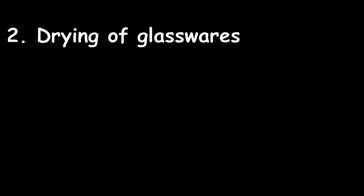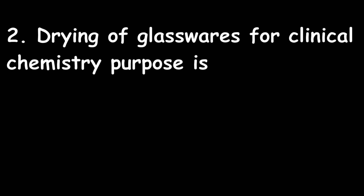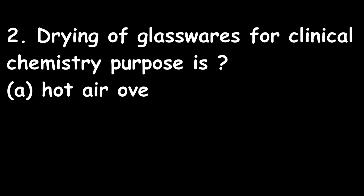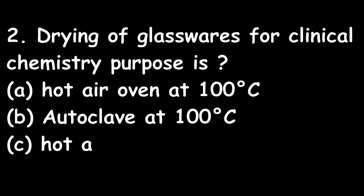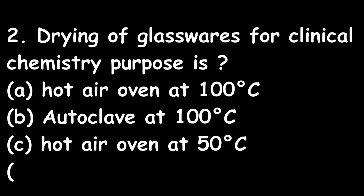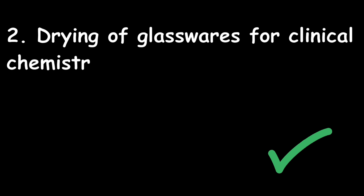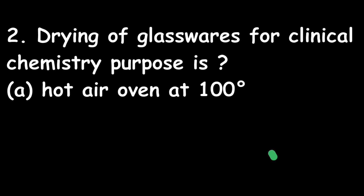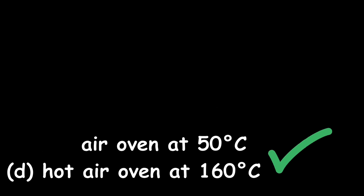Question 2: Drying of glassware for clinical chemistry purpose is done in: Option A: hot air oven at 100°C; Option B: autoclave at 100°C; Option C: hot air oven at 50°C; Option D: hot air oven at 160°C. The right answer is Option D — hot air oven at 160°C. Drying of glassware is done in a hot air oven at 160°C.